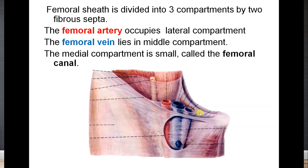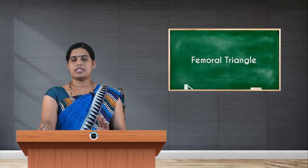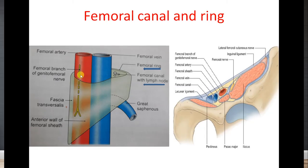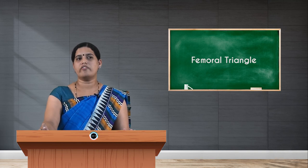The femoral sheath is divided into three compartments. The lateral compartment contains the femoral artery, the middle or intermediate compartment contains the femoral vein, and the medial-most compartment is called the femoral canal, where lymphatics and lymph nodes are present. The upper ring of the femoral canal is called the femoral ring.